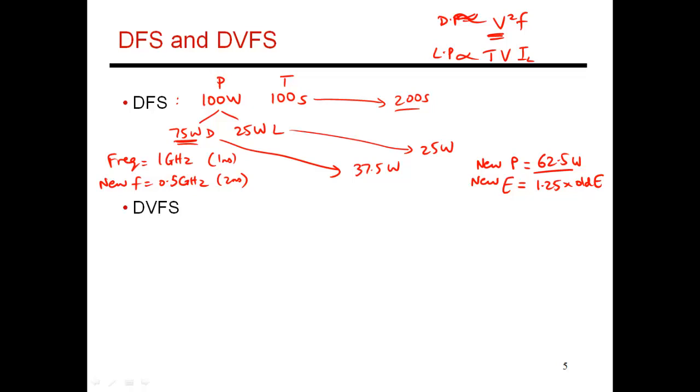So with dynamic frequency scaling, I have doubled my execution time, and I have not quite halved my power consumption because of this leakage component which is unaffected. So in terms of energy, dynamic frequency scaling seems to be a pretty bad idea. But in terms of power consumption, it can be pretty effective and allow a given processor to work correctly with a given cooling solution.